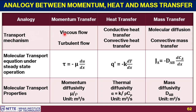In momentum transfer we call it viscous flow; equivalently in heat transfer we call it conductive heat transfer; and in mass transfer we call it molecular diffusion. In all three cases, molecular motion is important. For turbulent conditions, momentum transfer is called turbulent flow, heat transfer is called convective heat transfer, and mass transfer is called convective mass transfer — here the flow velocity becomes more predominant.